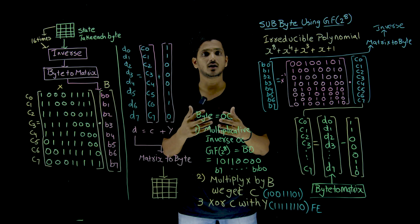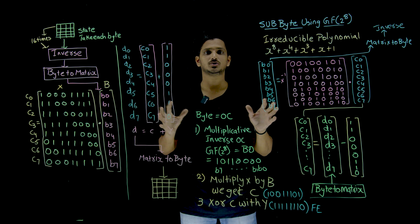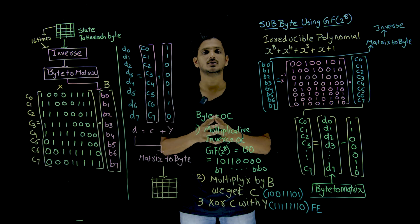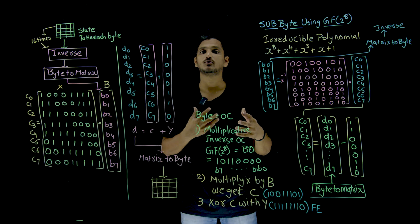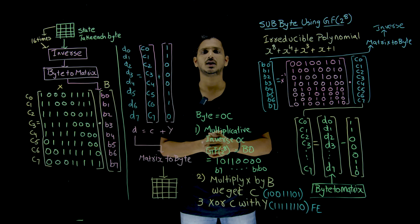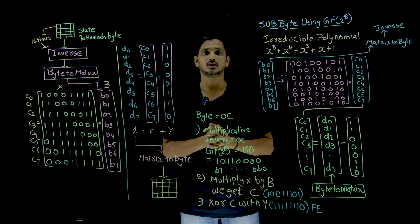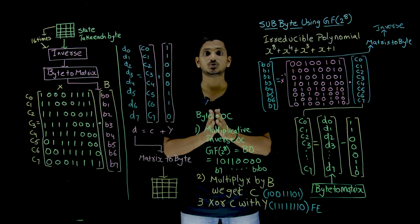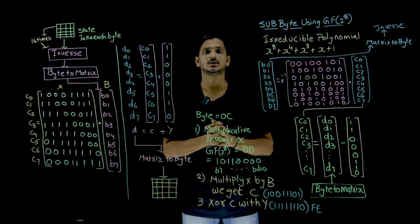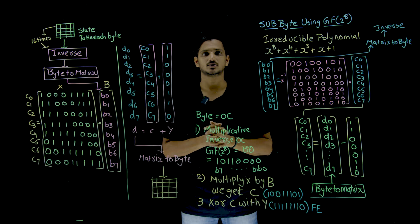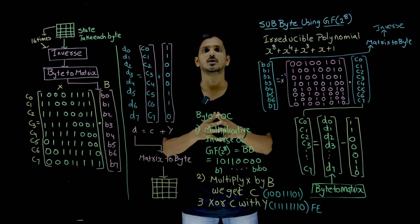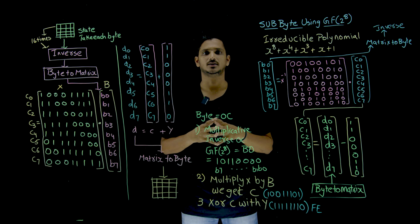Hope you understand how substitution byte works using GF of 2 power 8. If you have any questions regarding the concept, please post your questions in the comments section below. Thanks for watching. If you haven't subscribed to our channel, please subscribe and press the bell icon for the latest updates.